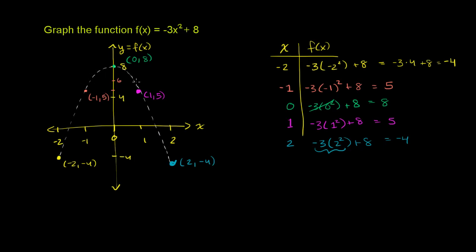If you're wondering how to know to curve it just like that using those points, that's from experience knowing this is a parabola. I encourage you to take clean graph paper, plot the points exactly, and even try values like negative 1 half and positive 1 half. You'll notice the right side of the curve looks like the left side — for any positive x value, f of x equals f of the corresponding negative x. That's because we square the input, so positive 2 and negative 2 both give the same result, and f of positive 1 equals f of negative 1.